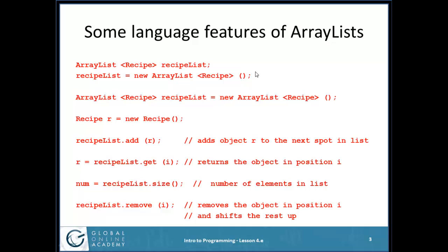Now whether I used separate statements or one combined statement, I can then create a new Recipe — not in an array or array list yet, just a recipe object called r, which is a new Recipe. Once I've created r, I can add it to my list. If I do recipeList.add(), it wants whatever was in the angle brackets — an ArrayList<Recipe> expects a Recipe. An ArrayList<String> expects a String. This adds object r to the next spot in the list.